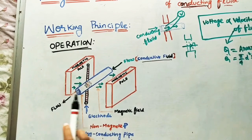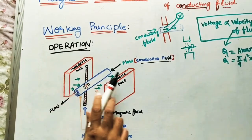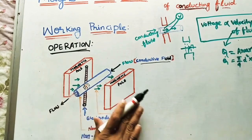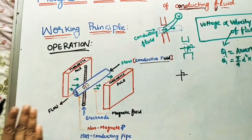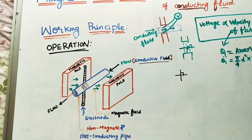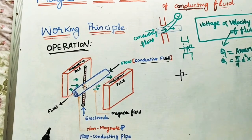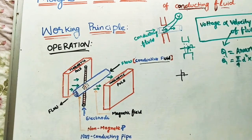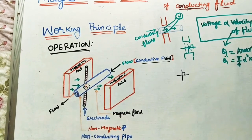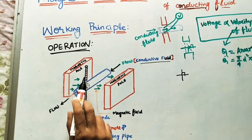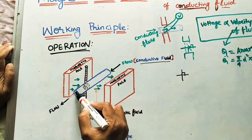Let us take the operation of this magnetic flow meter. Initially, two magnets are taken. Because of them, the magnetic field generates — these arrows show the direction of the magnetic field in the transverse direction, meaning perpendicular. The flow is perpendicular to the magnetic field direction. I am sending the conducting fluid through the non-conducting pipe in between the poles. Two terminals or electrodes are connected to this pipe.